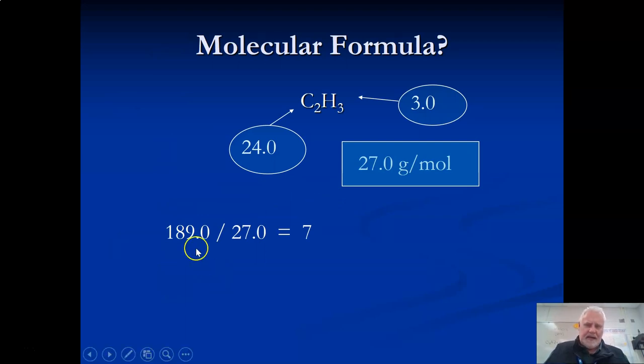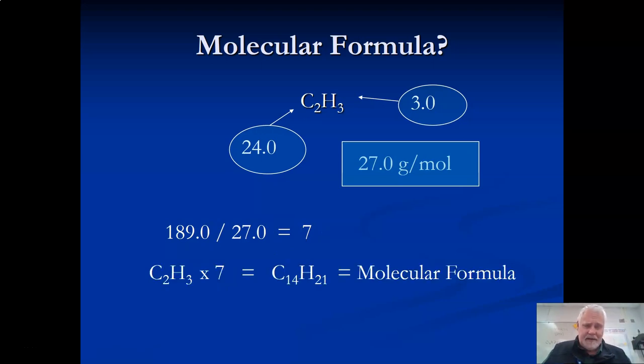If you divide those out, that works out to a nice clean whole number - if it's not a whole number, you probably did something wrong on that step. So then you take the C2H3, multiply 7 through there: 2 times 7 is 14, 3 times 7 is 21. C14H21 is the molecular formula of that compound.